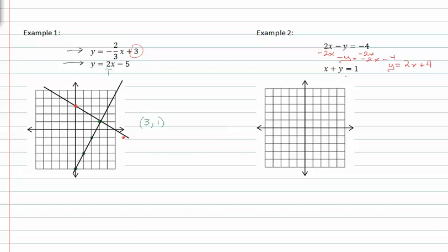In our second equation we have x plus y equals one. So if we subtract x from both sides, we can get y is equal to negative x plus one. Now both equations are in slope-intercept form.